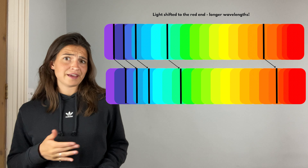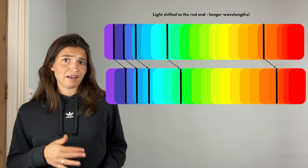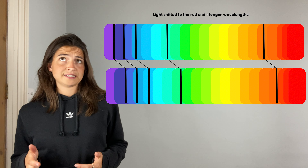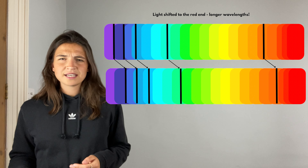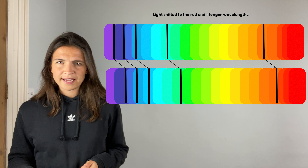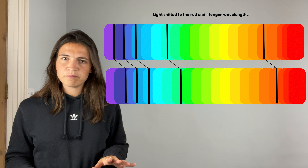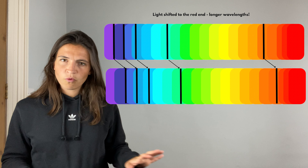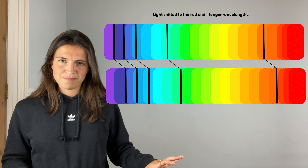Remember when we looked at the Doppler effect and my ambulance earlier? When my ambulance was moving away, I got longer wavelengths and shorter frequencies of sound. Since I've got the same thing here — longer wavelengths and shorter frequencies — this tells me that those galaxies are moving away from me.